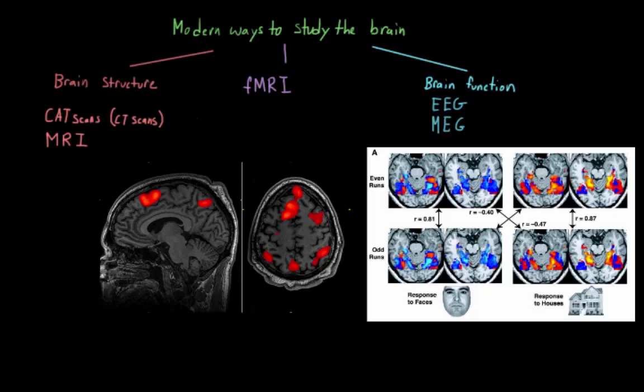So there might not be a lot of activity in the visual cortex when someone has their eyes closed, but when their eyes are open, that area of the brain would light up on the fMRI.